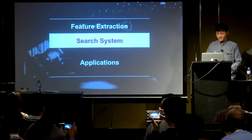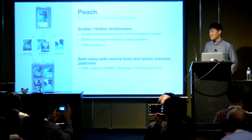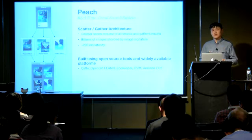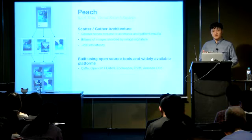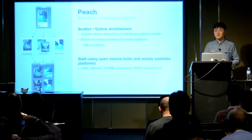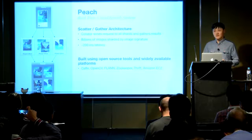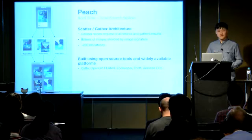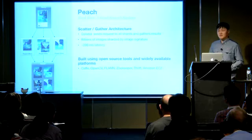Using the features generated with the pipeline David described, we can build a visual search system. For a high-level overview of how we approach visual similarity: given an image, we extract deep learning features, then take those features to do a nearest neighbor lookup. After getting candidates, we re-rank them using metadata we have about the image to get a final list of visually similar results. At Pinterest, to scale to billions of images, we implemented a scatter-gather architecture.